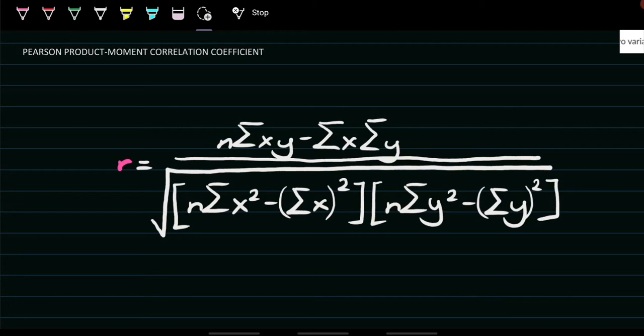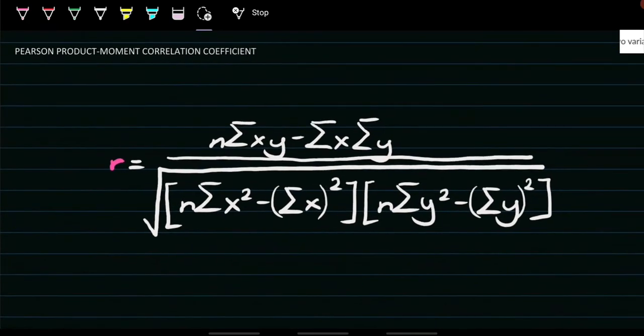There are different facts about the value of the correlation r, or our correlation coefficient using the Pearson r. The value of r is always between negative 1 and positive 1. So if we get a value greater than 1, like positive 2 and above, that means you need to double-check your solution. The magnitude indicates the strength of our correlation, depending on the value we get.